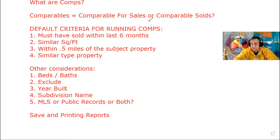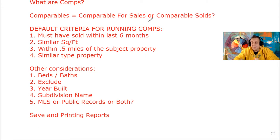Your comparables need to be near the same size as the subject property — the property you're looking at doing a deal on. Criteria number three: they need to be close to the subject property, within 0.5 miles. I actually like to modify it down to 0.3 miles — a third of a mile or less. The closer the better; if you can get it in the same neighborhood or on the same street, even better.